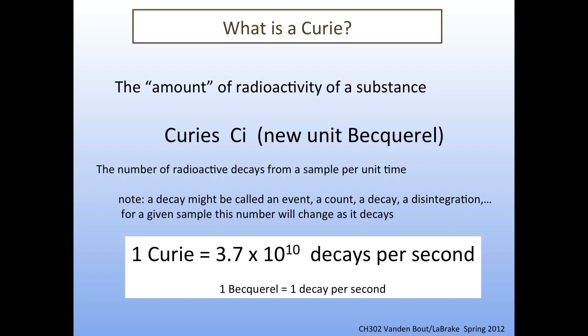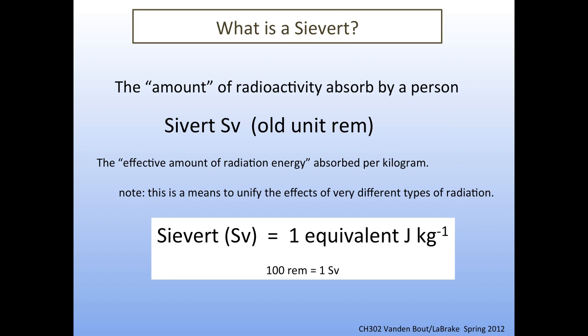The other thing we're always worried about is how much radiation have I, as a person, been exposed to. The unit for this is a sievert, or SV. The old unit is the Rankin Equivalent Man. What a sievert is is a certain amount of radiation energy that has been absorbed per kilogram. One of the difficulties is deciding how much energy all different types of radiation have, because alpha radiation is different than beta radiation.